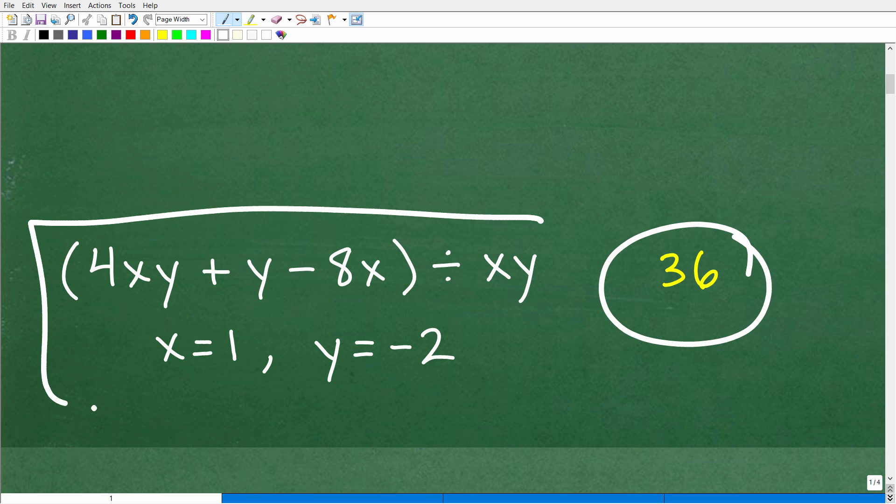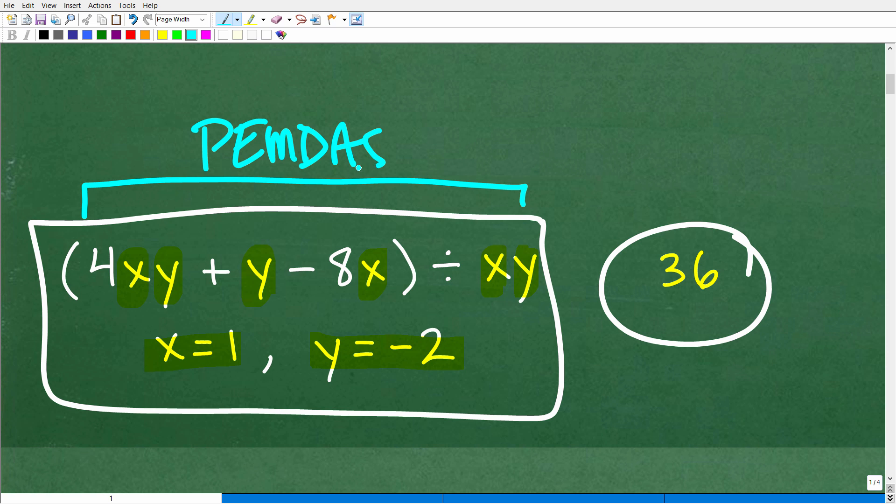Okay, so this again is our problem. And we want to evaluate this expression for these values. So x is equal to 1 and y is equal to negative 2. What does this word evaluate mean? Well, it means that we're going to replace all these x and y's with these respective values. So anytime we see an x, we're going to replace that with a 1. And every time we see a y, we're going to replace this with a negative 2. And then all this right here is going to become one big numeric expression. And you're going to need to understand PEMDAS, which is the correct order of operations in order to simplify this problem. So there's a lot to kind of cover here.